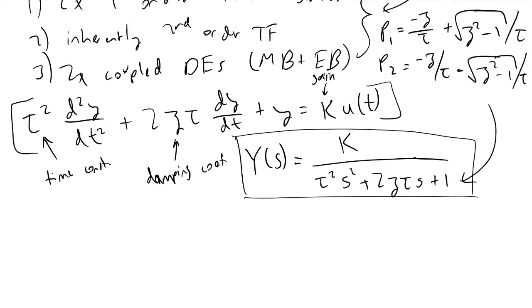We're going to examine three cases. The first case: if zeta is greater than one, it will lead us to get two distinct real roots in our system. In other words, p1 does not equal p2.